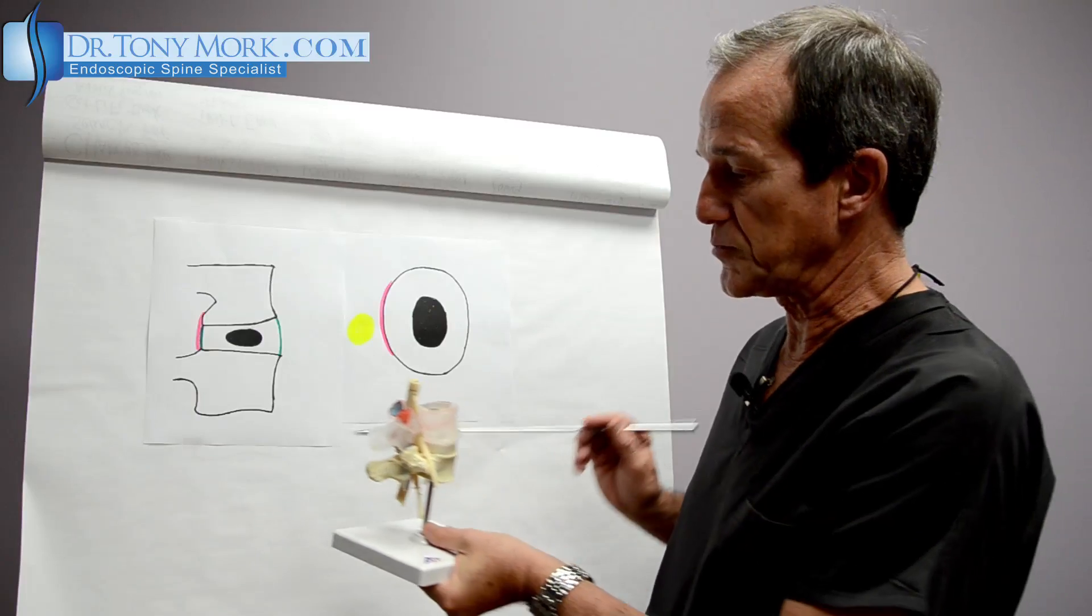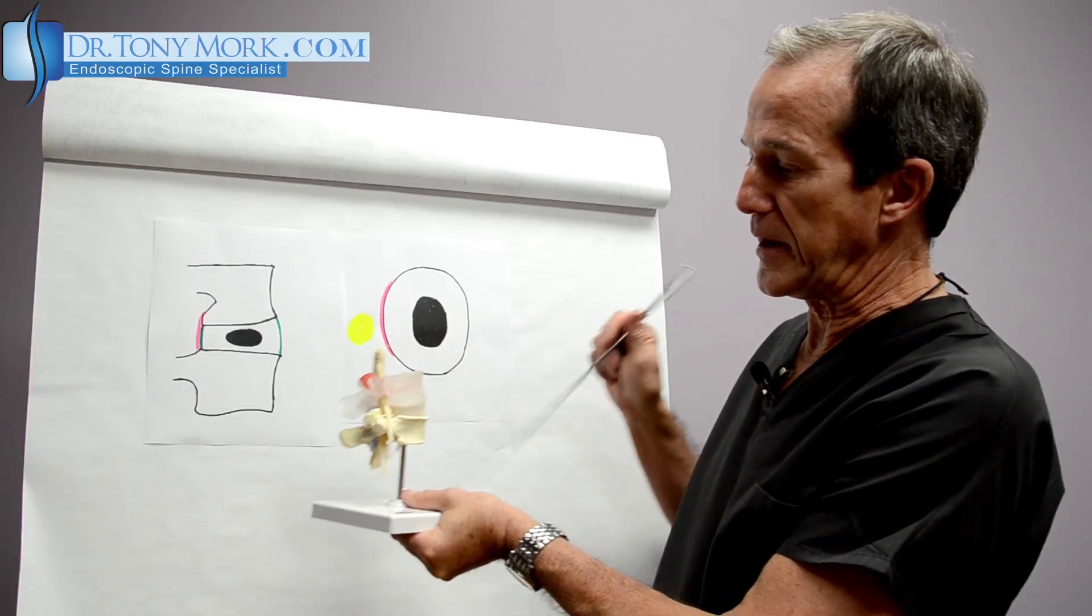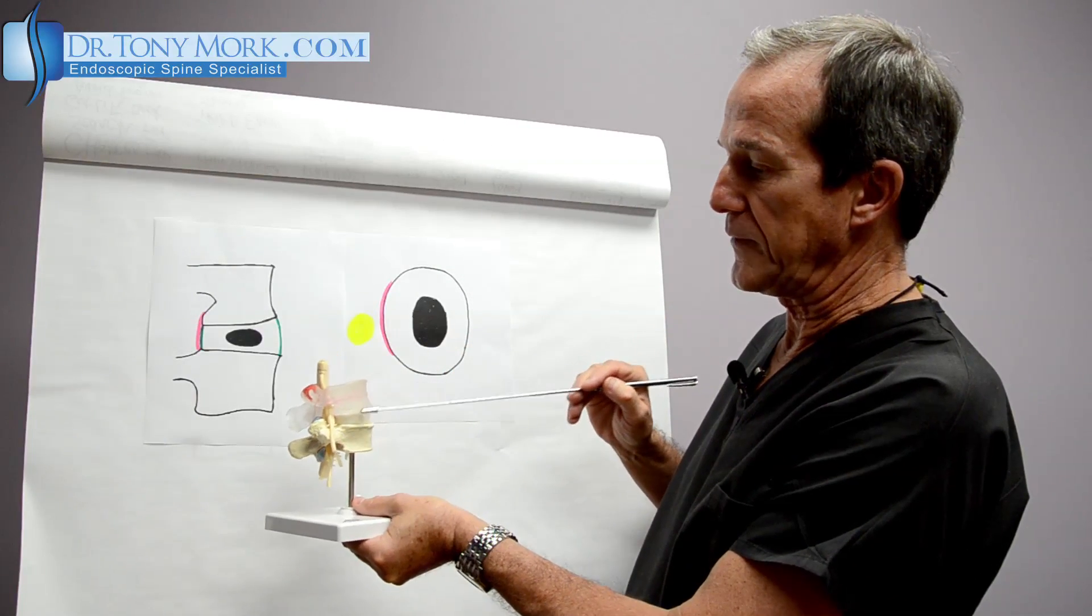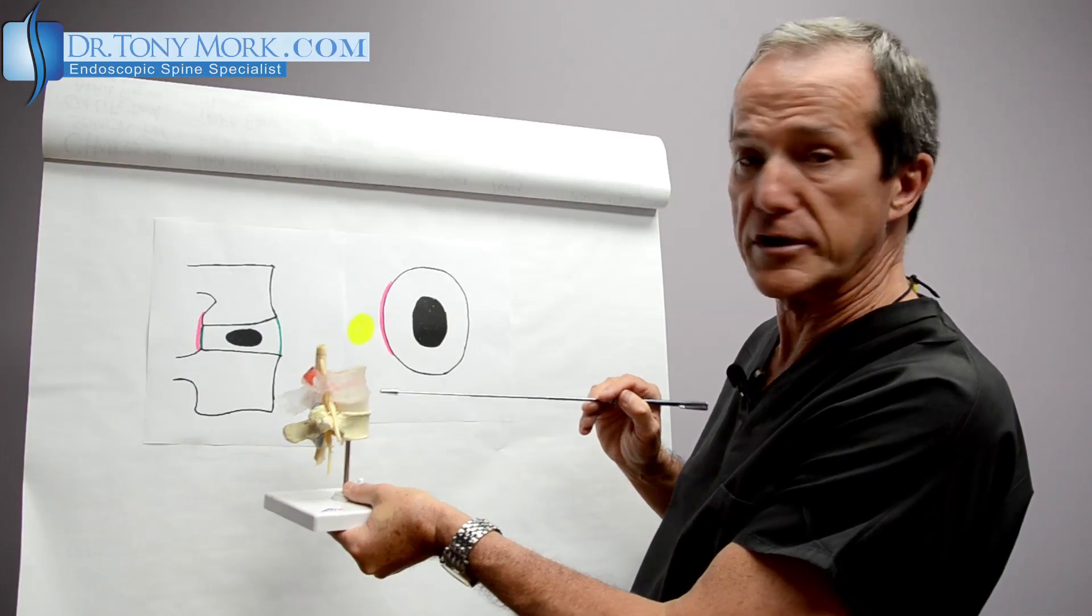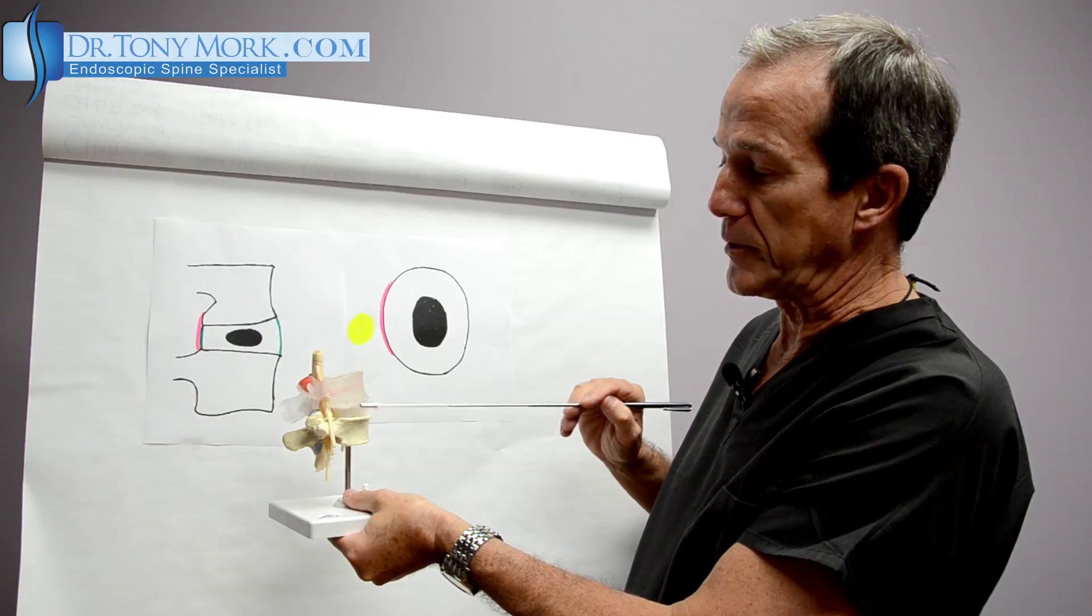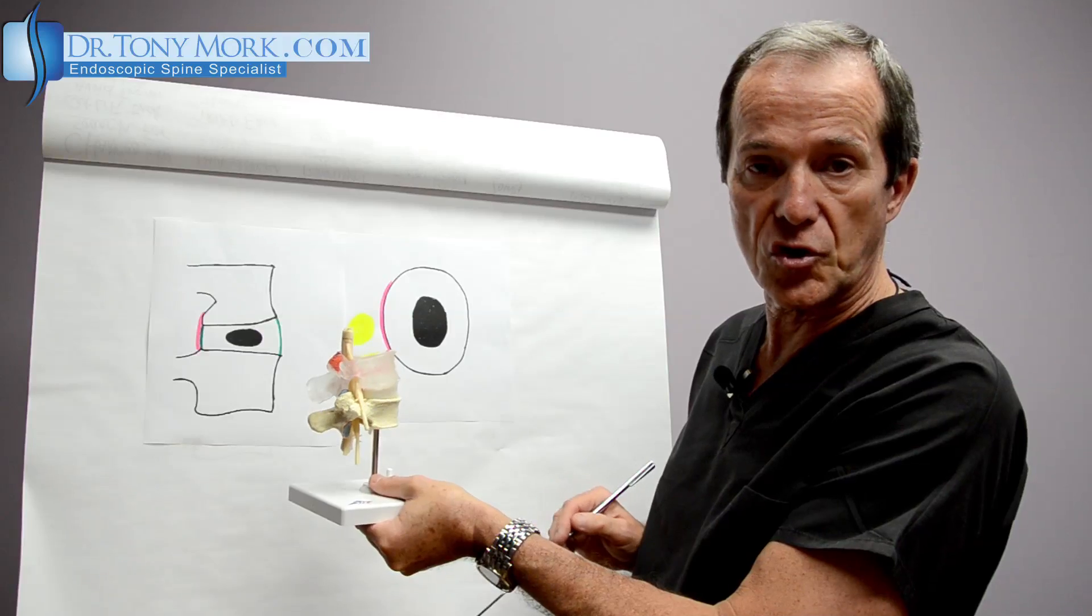First of all, I'd like to just put this up here. This is a model of the spine. This is a vertebrae. This is the disc which we'll be talking about and this is the vertebrae below. So you can see that the actual vertebrae sandwich the disc which is the cushion in the center.